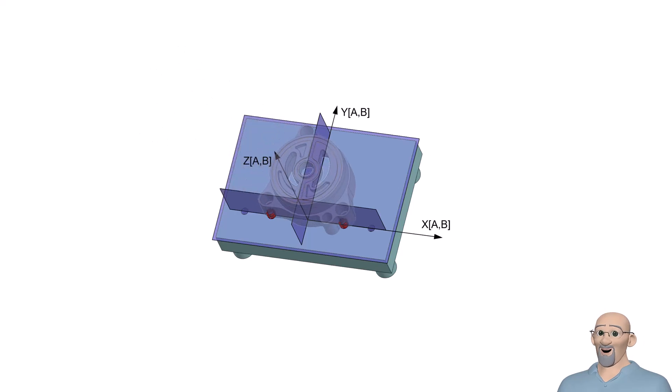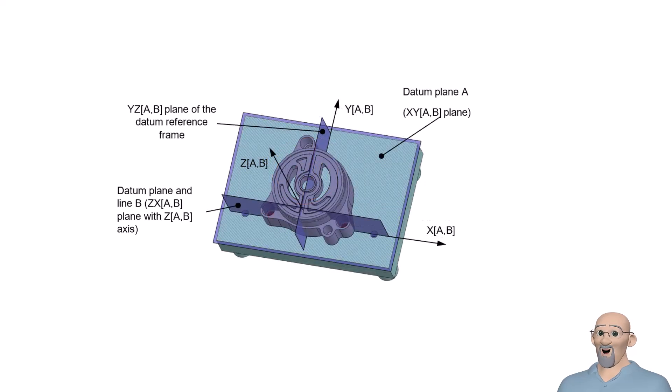It is important to remember that datums and the datum reference frame constrained by those datums are found in the datum feature simulators. The datum reference frame is related to the part when the part's datum features are mating in the order of precedence with the datum feature simulators.